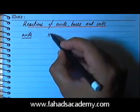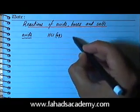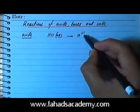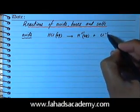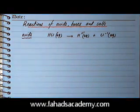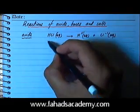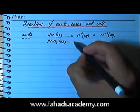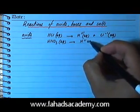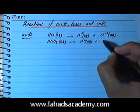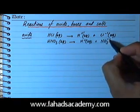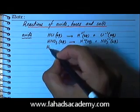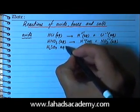The first acid was hydrochloric acid (HCl), and whenever it's dissolved in water it's going to produce H+ ions (aq) and Cl- ions (aq). Then you had nitric acid, which was HNO3 (aq), and that produced H+ ions (aq) and NO3- nitrate ions (aq).